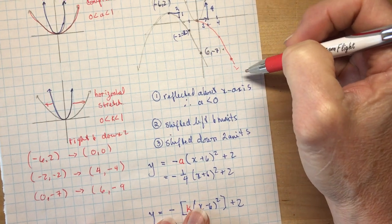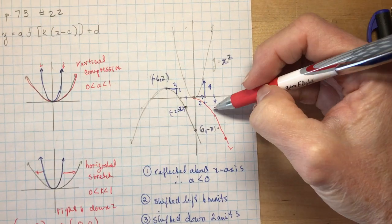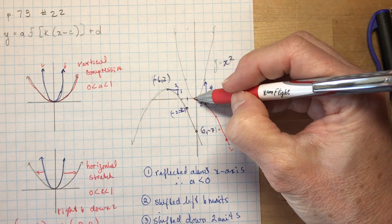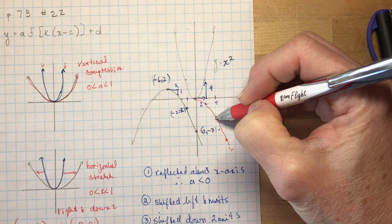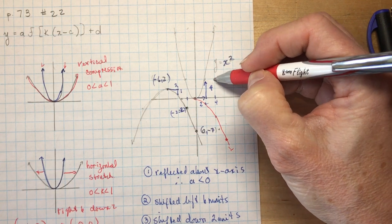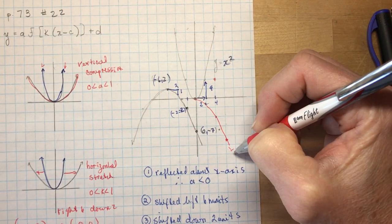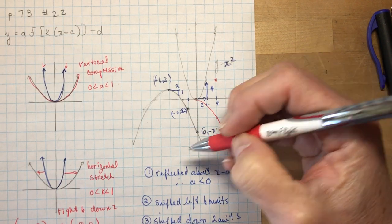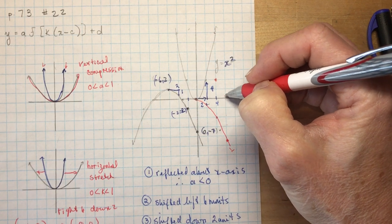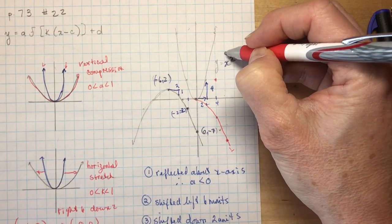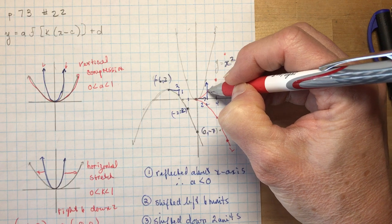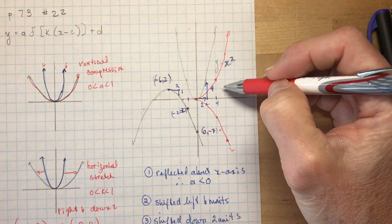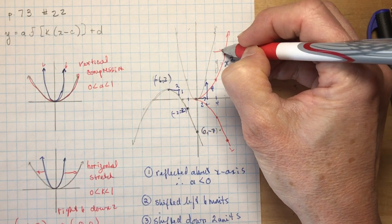Now, for me to see this even more clearly, I'm going to reflect this back up. 0, 0 stays here. 4, minus 4 is going to become 4 and 4. And 6 and minus 9 is going to become 6 and 9. So here is where this function would be if all I did was horizontally stretch it.